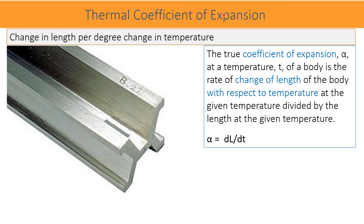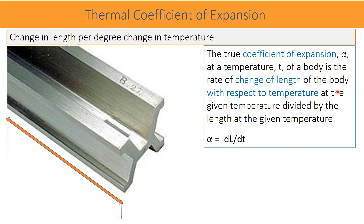Thermal coefficient of expansion: different materials expand by different lengths with respect to change in temperature. This change per degree and per meter is known as the material expansion coefficient. The true coefficient of expansion, alpha, at a temperature T of a body is the rate of change of length of the body with respect to temperature at the given temperature, divided by the length at the given temperature — that is, alpha equals dL/dT.